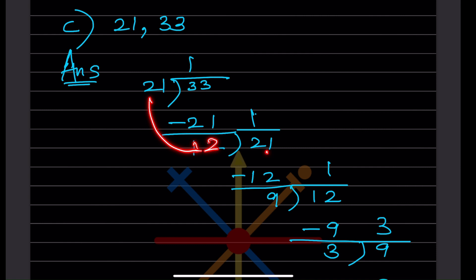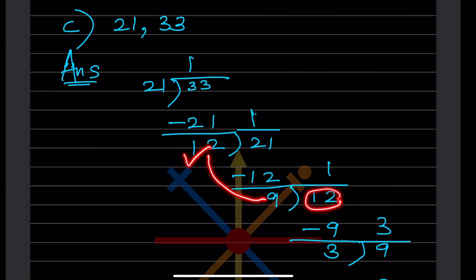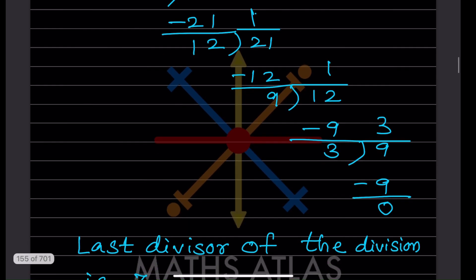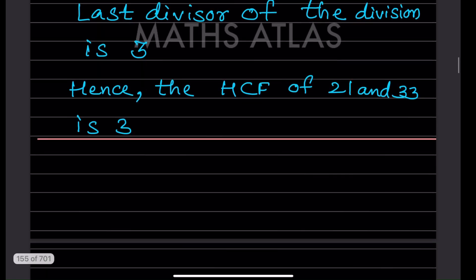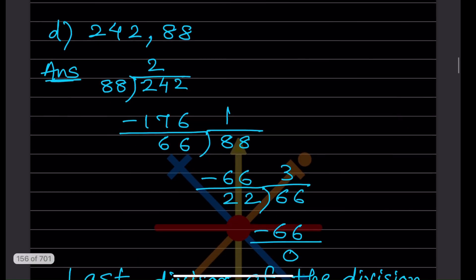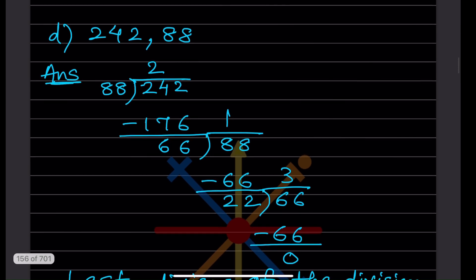For the next pair: 21 × 1 = 21, remainder is 12. Divide 21 by 12: 12 × 1 = 12, remainder is 9. Divide 12 by 9: 9 × 1 = 9, remainder is 3. Divide 9 by 3: 3 × 3 = 9, remainder is 0. The last divisor is 3, so the HCF is 3.